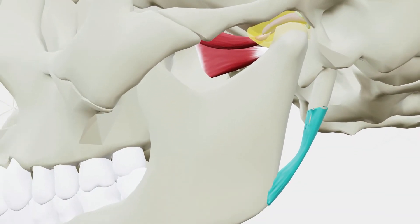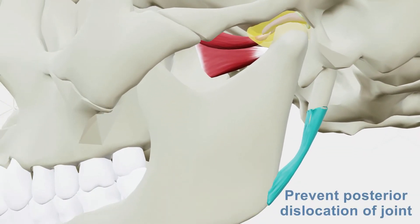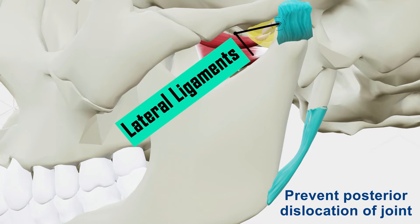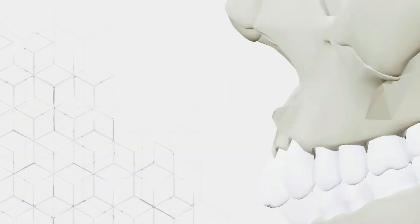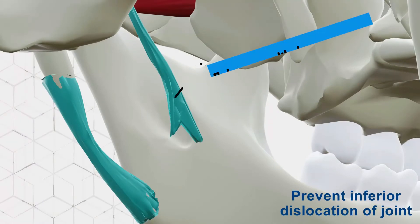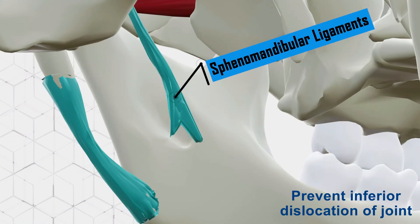There are three extracapsular ligaments that act to stabilize the temporomandibular joint. The lateral ligament runs from the articular tubercle to the mandibular neck; it is a thickening of the joint capsule and acts to prevent posterior dislocation of the joint. The sphenomandibular ligament originates from the sphenoid spine and attaches to the mandible, limiting distension of the mandible in an inferior direction.